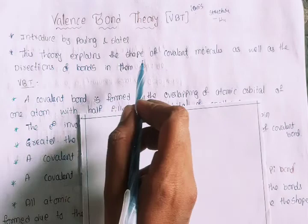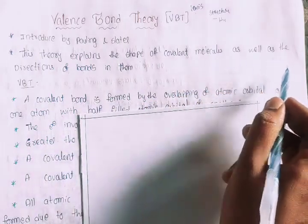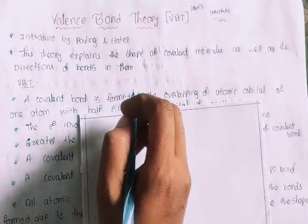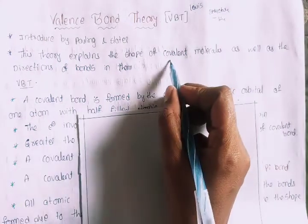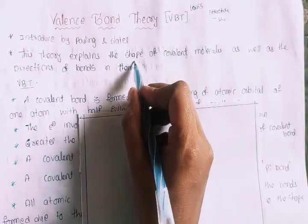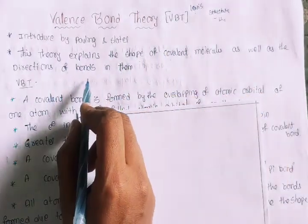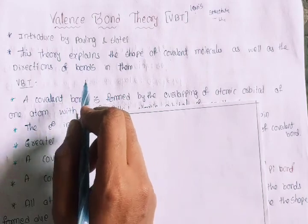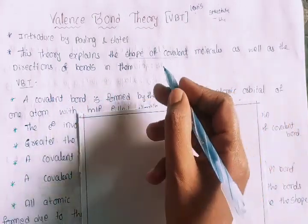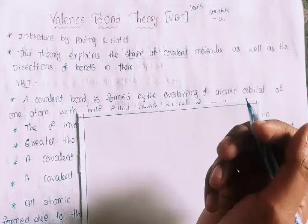This theory explains the shape of covalent molecules as well as the direction of bonds in them. This molecule is a covalent molecule — shape and direction of bonds — so the shape of a covalent molecule is explained by valence bond theory.